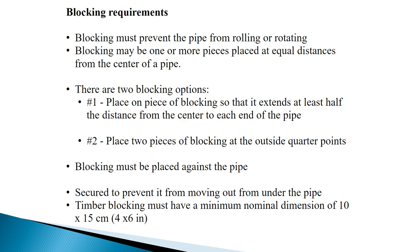Blocking Requirements. Blocking must prevent the pipe from rolling or rotating. Blocking may be one or more pieces placed at equal distances from the center of a pipe. There are two blocking options. Option one: place one piece of blocking so that it extends at least half the distance from the center to each end of the pipe.